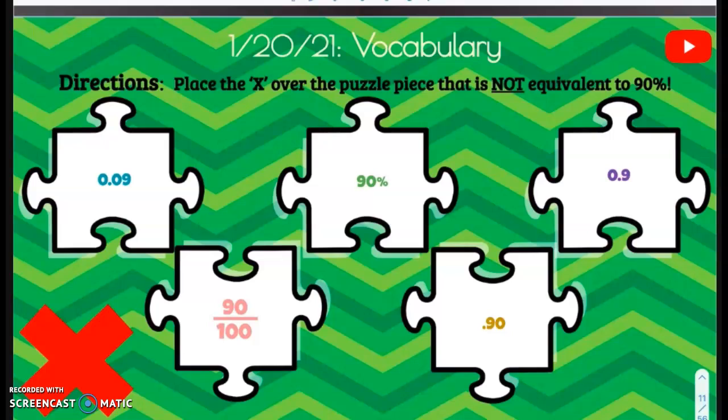January 20th, 2021, vocabulary. Directions: Place the X over the puzzle piece that is not equivalent to 90%. So we're going to figure out what is not equivalent to 90%.